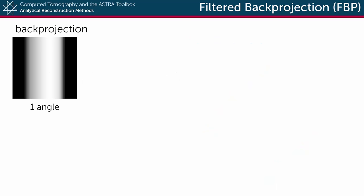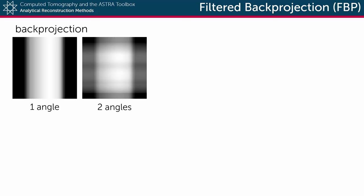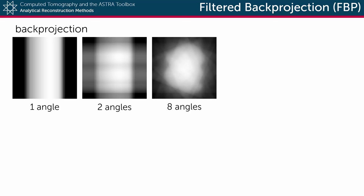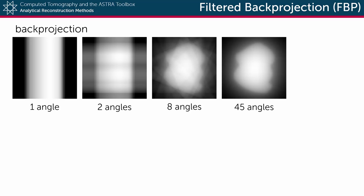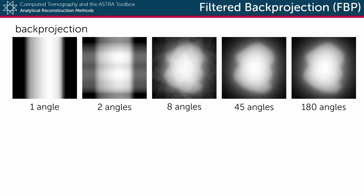So let's look at an example. If we back project from one direction, you indeed get the detector function smeared out over the volume. If we then add the back projection of a second direction, two of such smears are added together. For eight projections, eight smears are added together, and you can already start to see the outline of the object we're interested in. As more projections are back projected, this object becomes clearer and clearer. However, it never really becomes totally sharp, and there is a good reason for this.